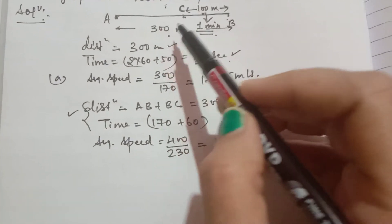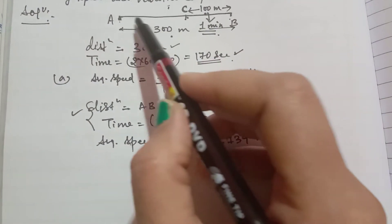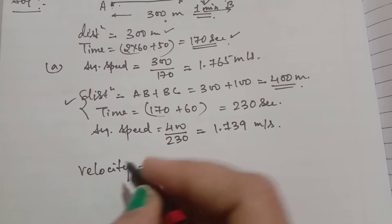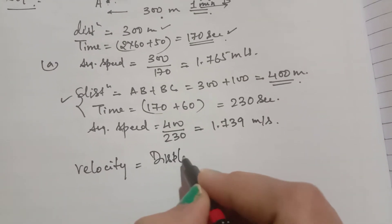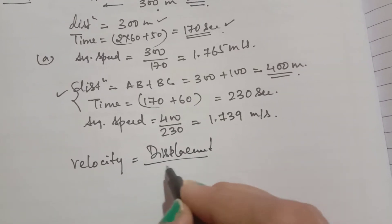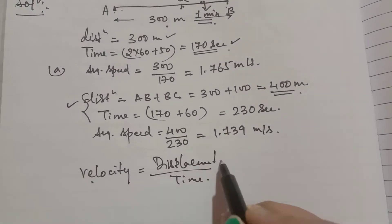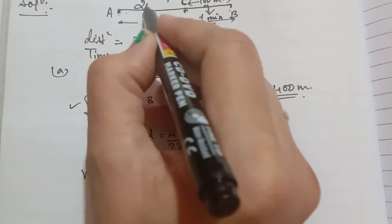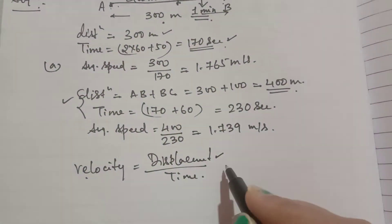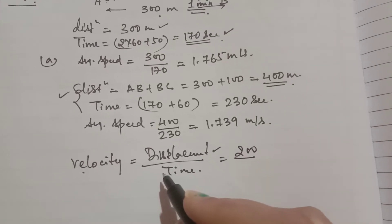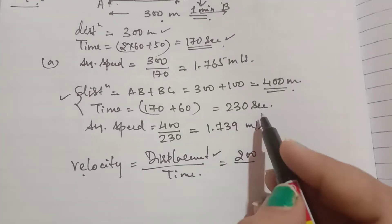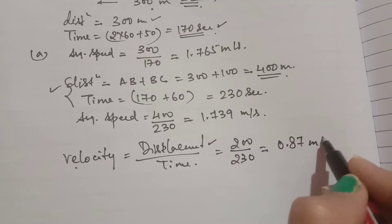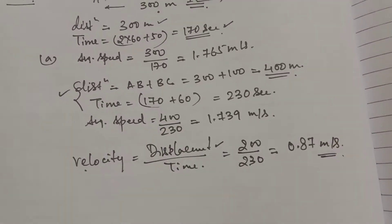Now find the velocity from A to C. Velocity equals displacement divided by time. The initial position is A and the final position is C, so the displacement is 200 meters. Velocity = 200 ÷ 230 = 0.87 meters per second. That is the velocity.